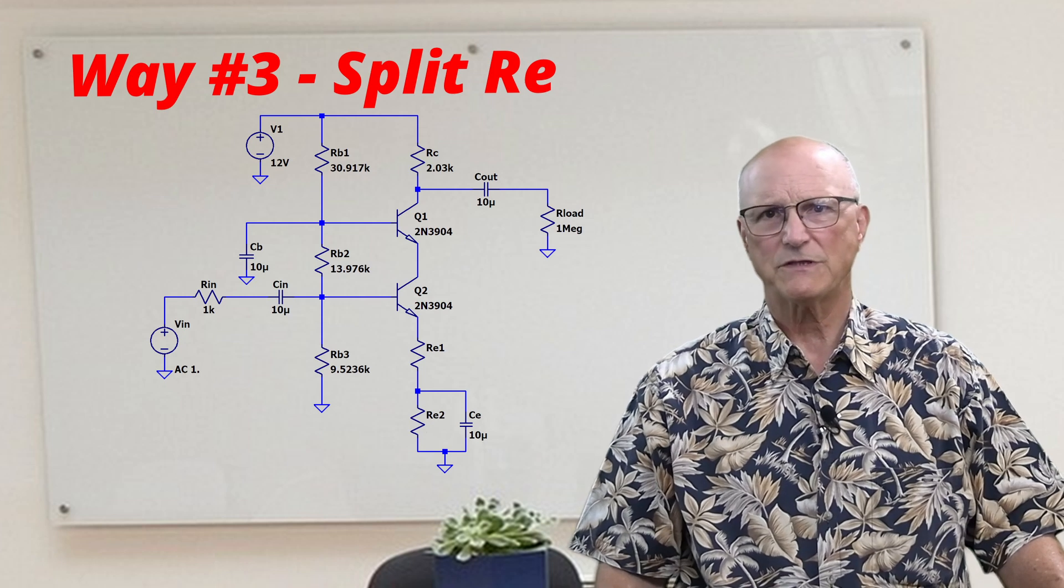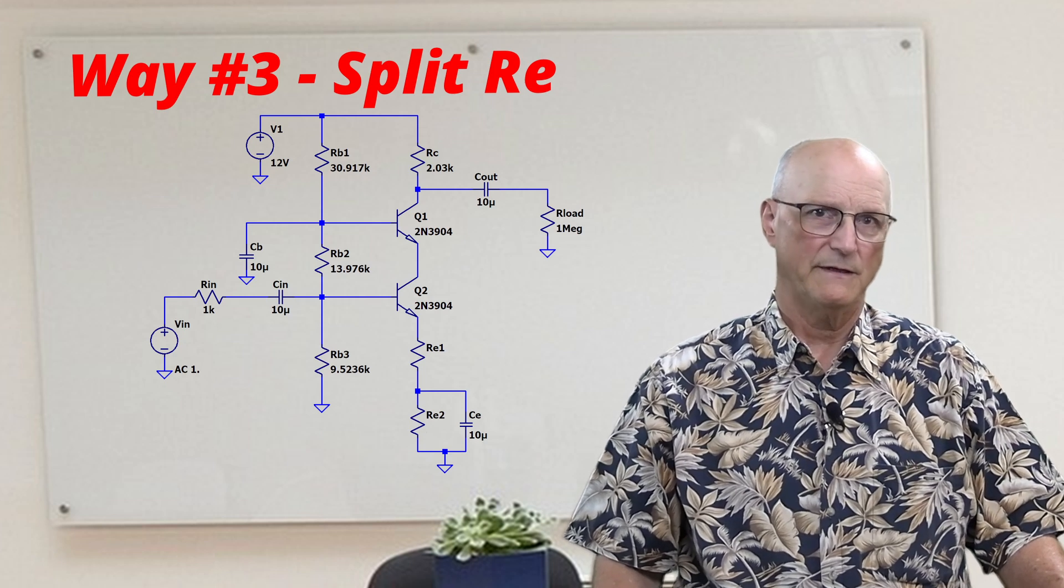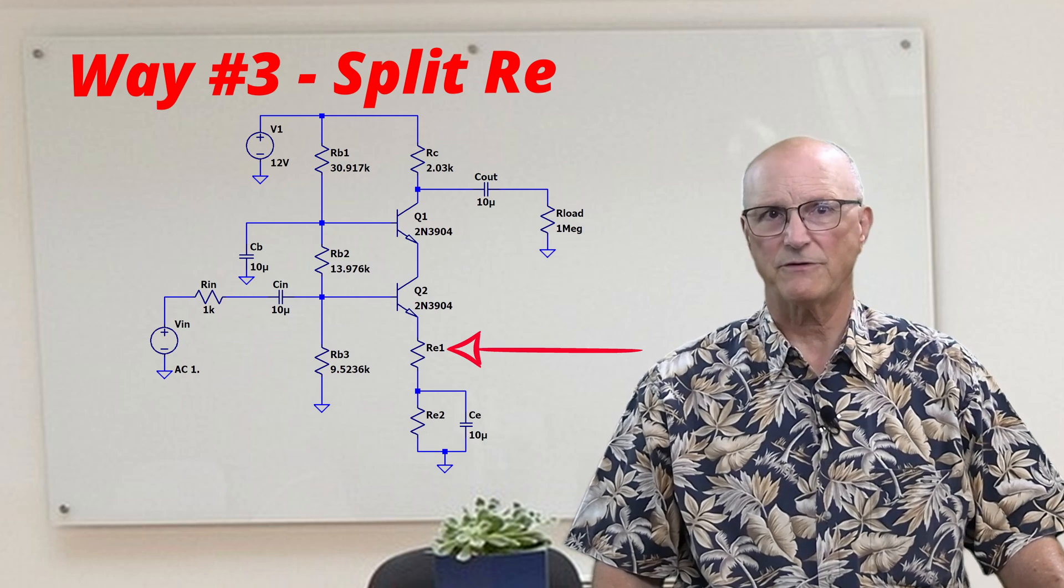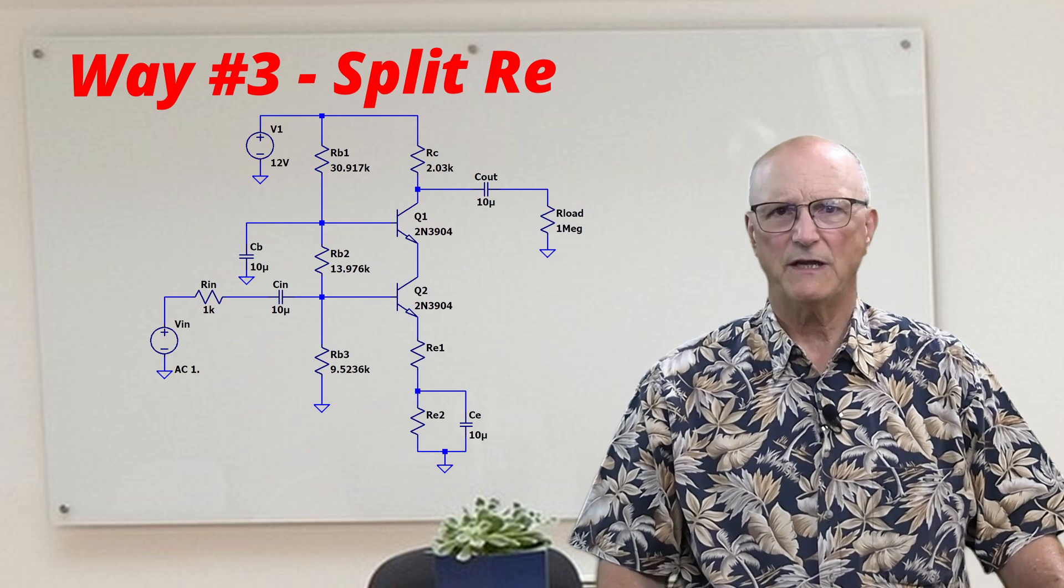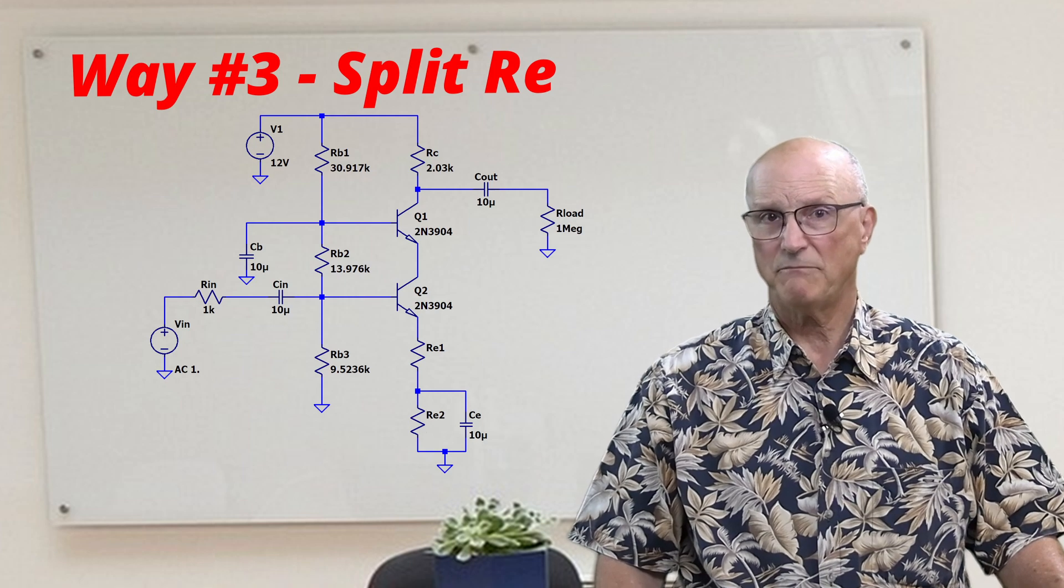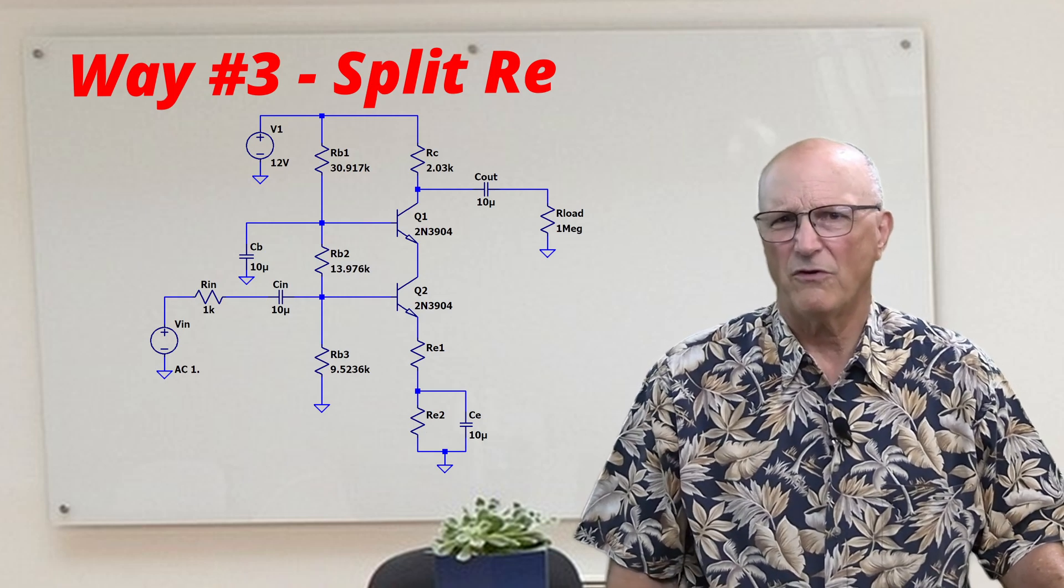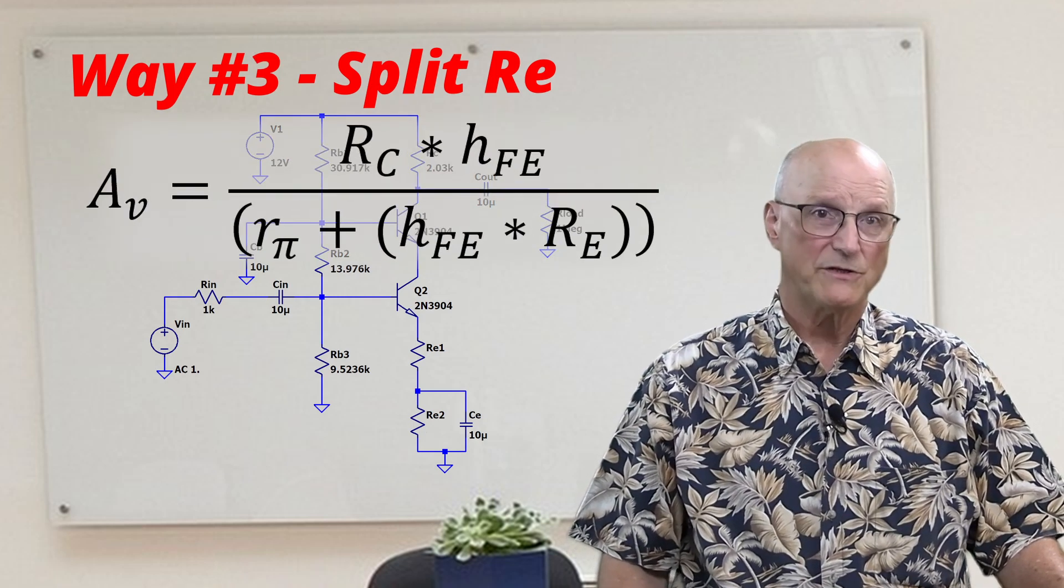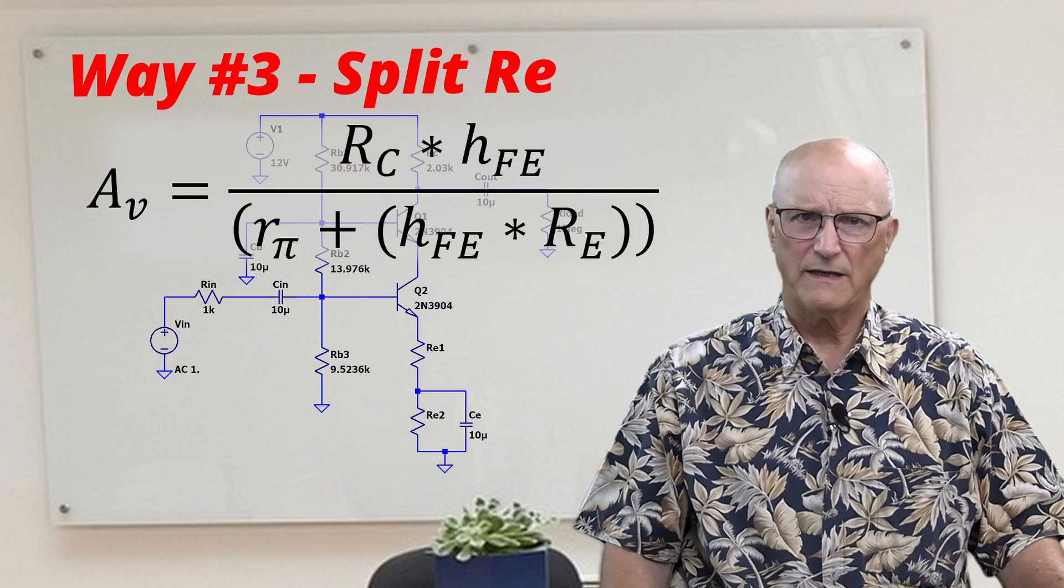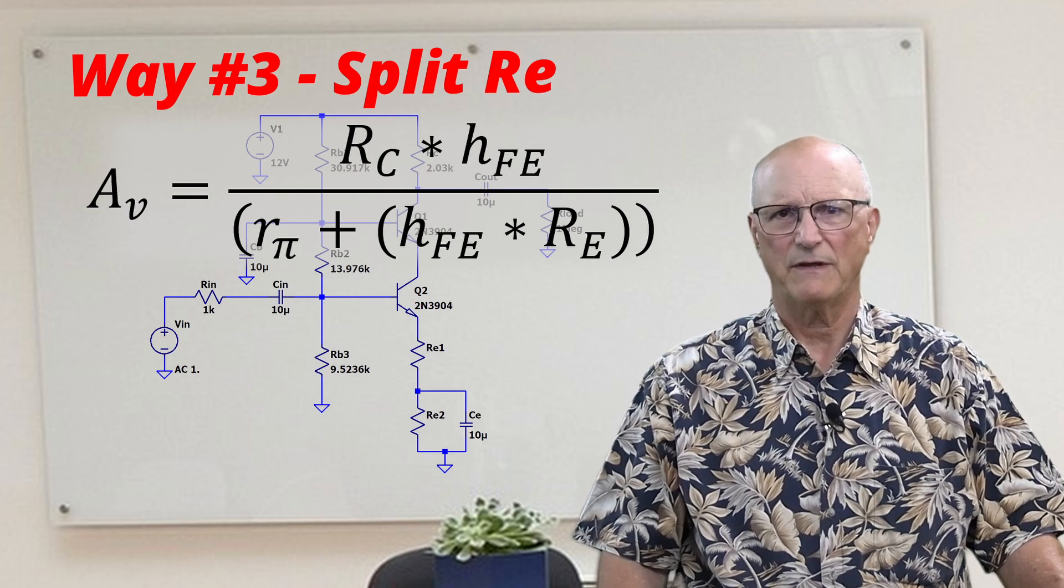The quiescent operating point of the circuit remains unchanged from a DC perspective. The gain, on the other hand, is dependent upon the value of the upper unbypassed emitter resistor. In essence, we are reducing the gain of the common emitter amplifier below 1. The gain of the common base circuit remains pretty much unchanged. This equation gives us the approximate gain. What if we have a target gain in mind? How do we calculate the required value of the upper emitter resistor?